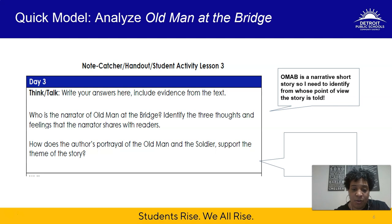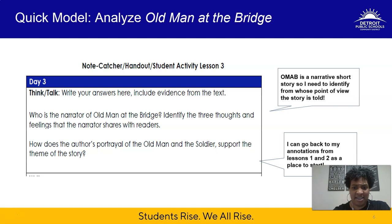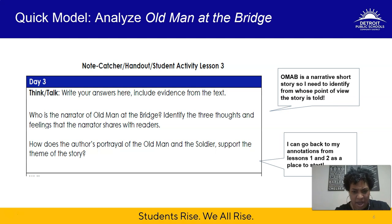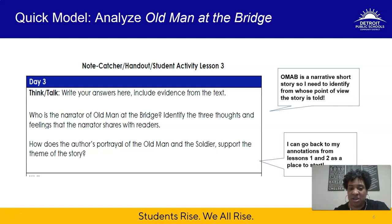For question two — how does the author's portrayal of the old man and the soldier support the theme? — the author makes very intentional choices about how he portrays each character. How does he characterize them? One way I can figure that out is to go back to my annotations from lessons one and two — tremendous places to start, because I was already making reactions to behaviors and making inferences about what people were thinking and feeling. So go back to those annotations; there you'll find good answers and suggestions. Talking about it will help you clarify even more.